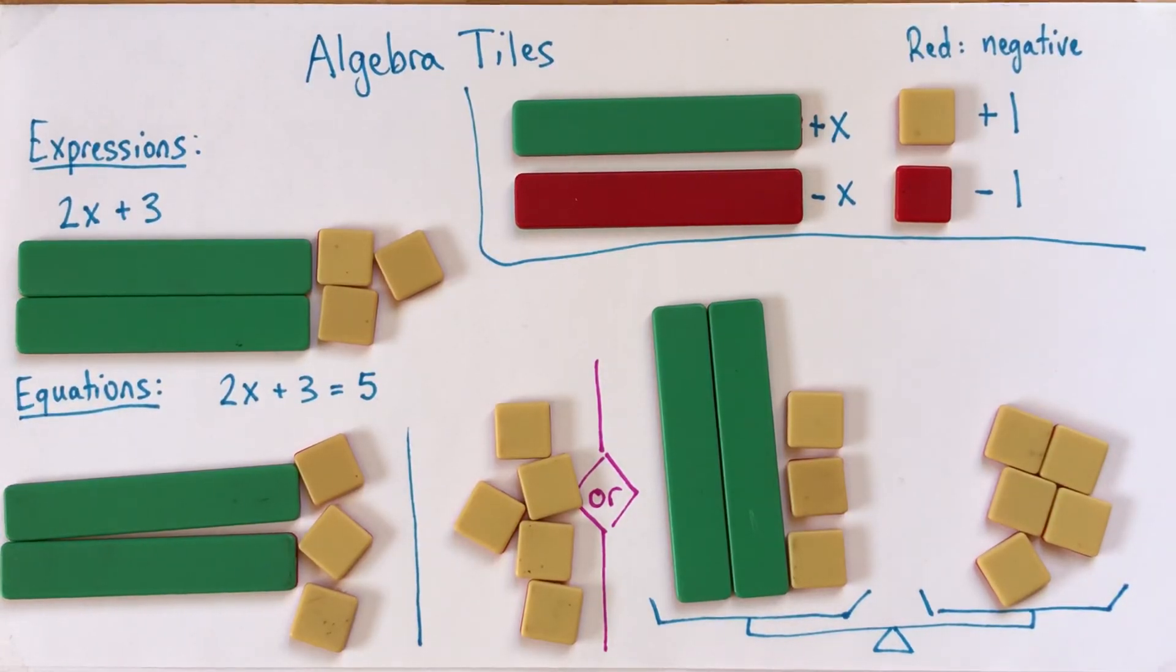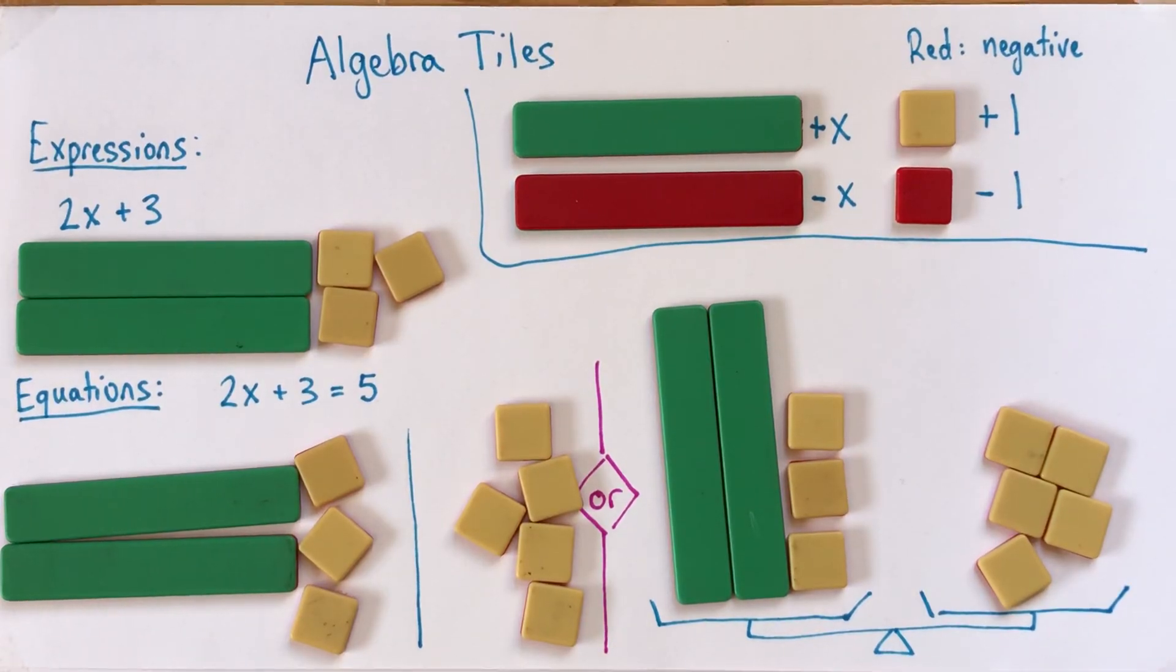Alright. So again, these are variable tiles, or maybe X tiles for short, or it could be any variable. And these are unit tiles, which represent positive 1 and negative 1. Alright. Good luck with algebra tiles.